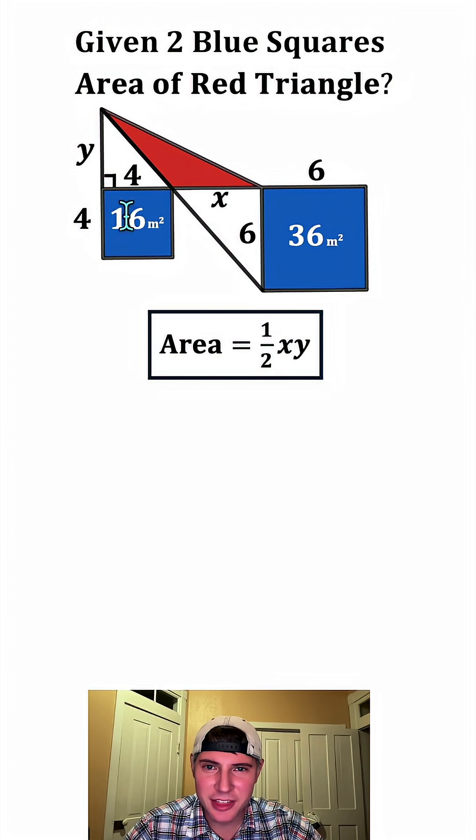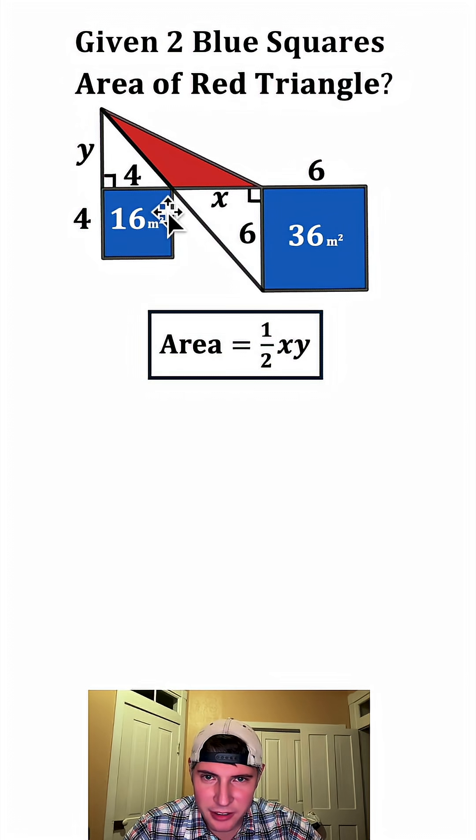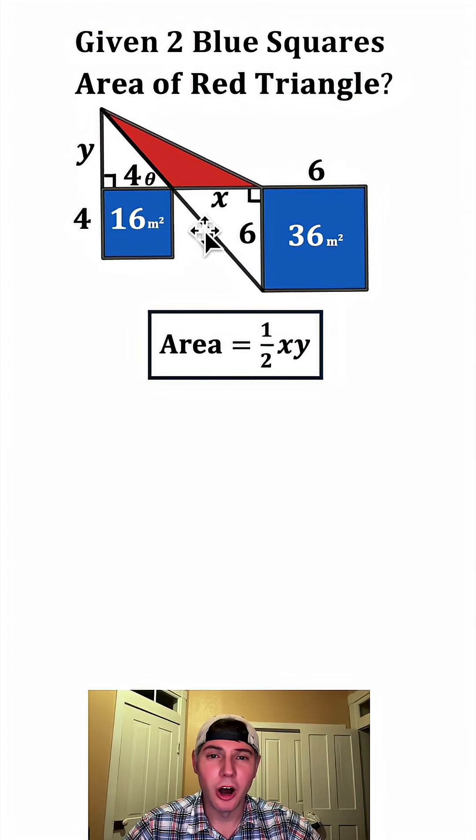And then from here, just like this was a right angle right here, this one would also be a right angle. And then if we look at this angle right here, let's call it theta. This angle will also be theta, because these are vertical angles, and vertical angles are always congruent.